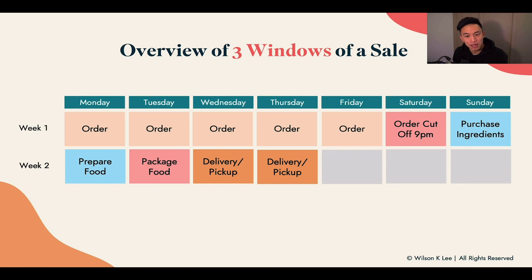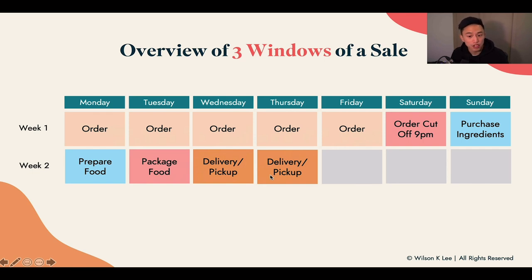Lastly, the third window of sale is delivery and pickup — this is the time for delivery and pickup for all these orders. As you can see, when you have this schedule all laid out, it becomes a lot easier to manage this operation. And this just goes on from week two, week three, week four — it keeps going like that.